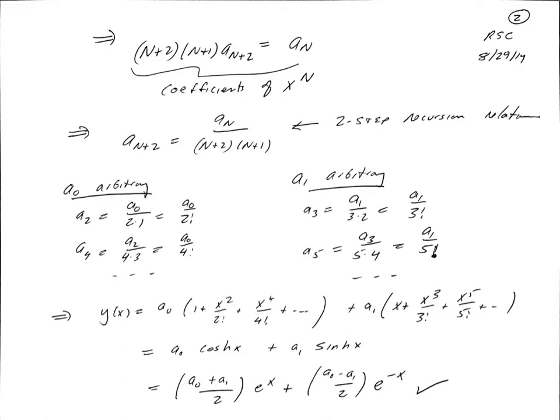If we know a₀, we know a₂, a₄, a₆, a₈. If we know a₁, we know a₃, a₅, a₇, etc.